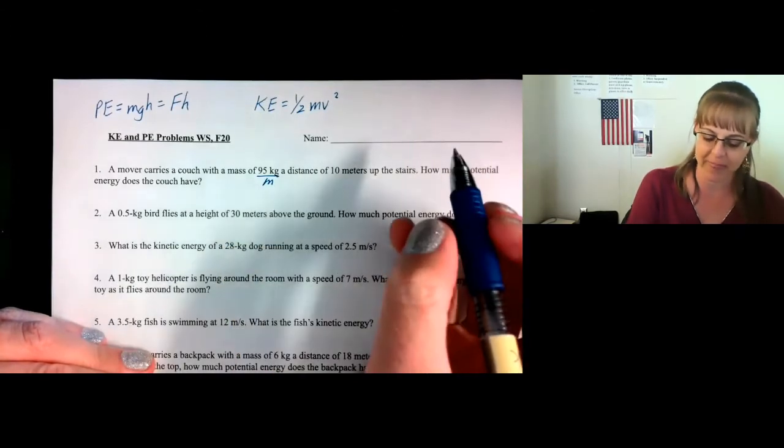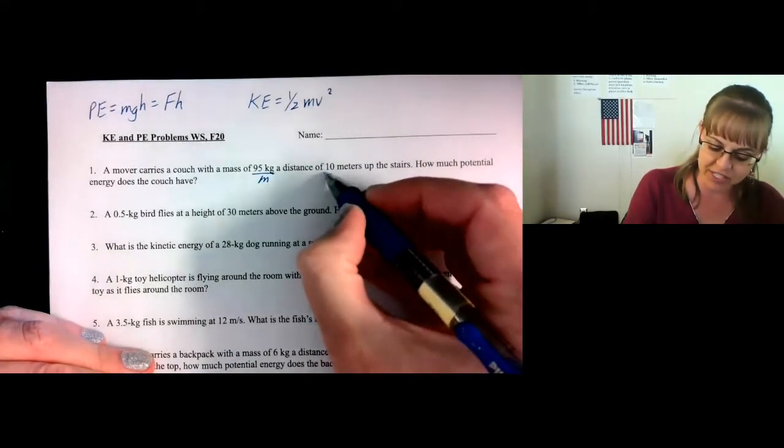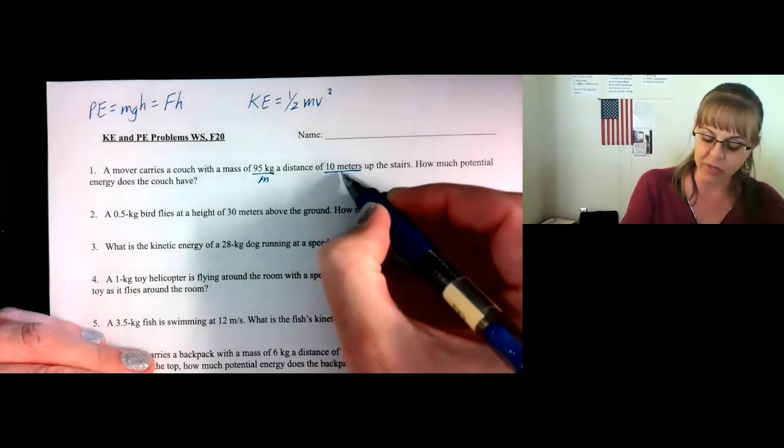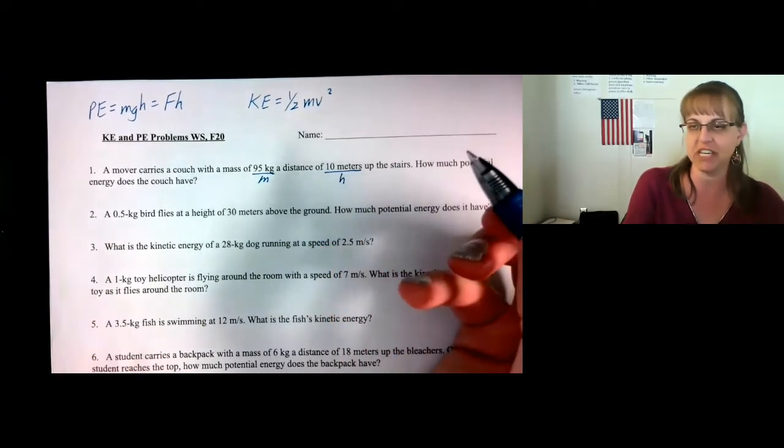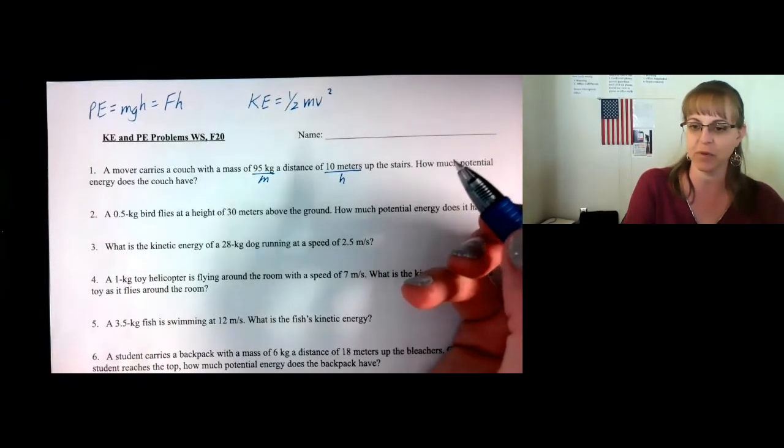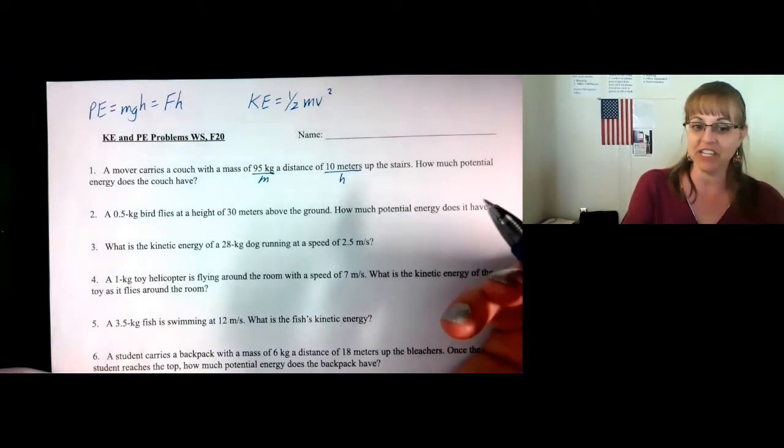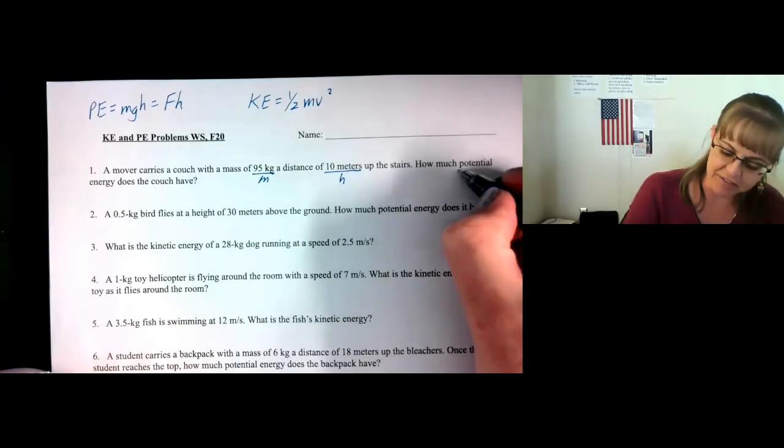We have a distance of 10 meters. So if you put D for distance, remember that's the height of the stairs. So D and H are somewhat interchangeable. How much potential energy does the couch have?